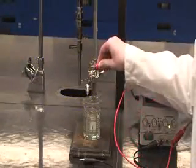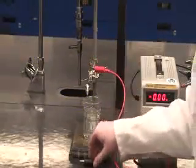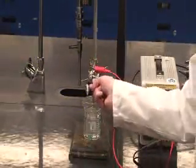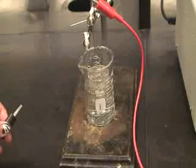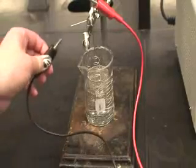Using the remaining red alligator clip from the amp meter attach it to the anode and using the remaining black alligator clip from the amp meter attach it to the cathode. A small spark may occur when attaching to the cathode.